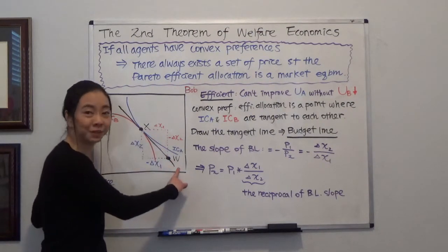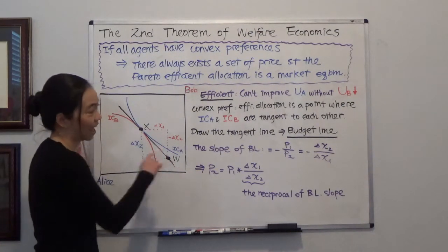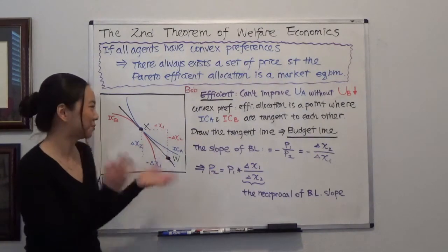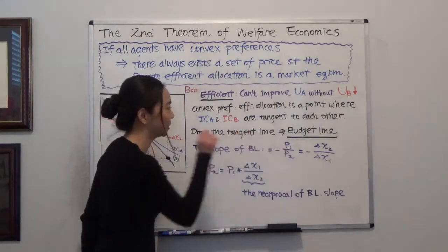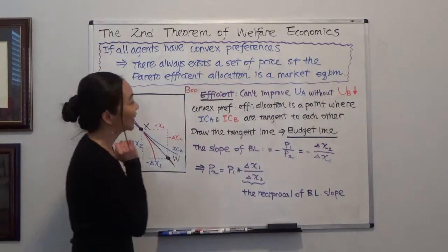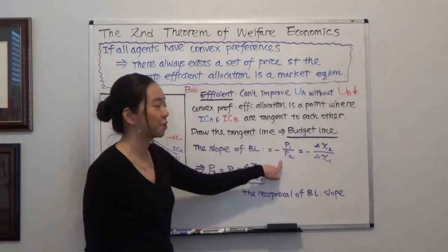So once we have the budget line, we will have the price ratio. Because remember the budget line, we can calculate the slope of the budget line, is equal to negative p1 over p2.